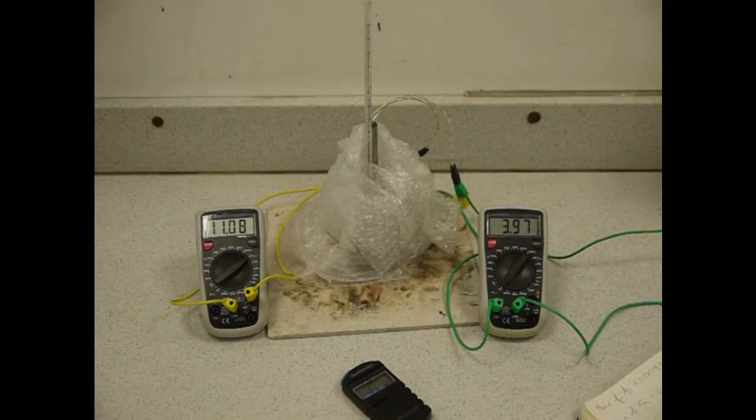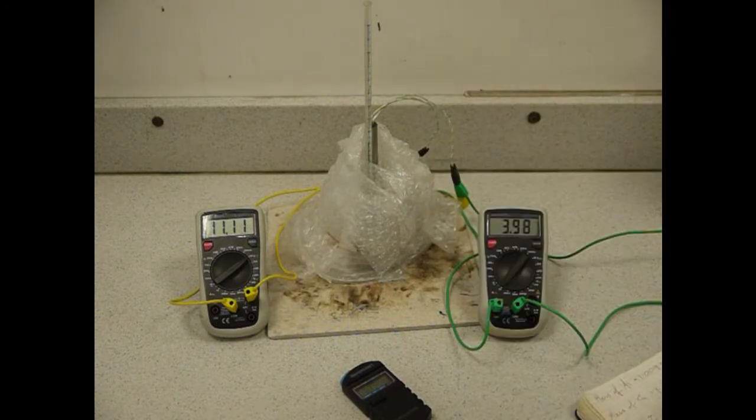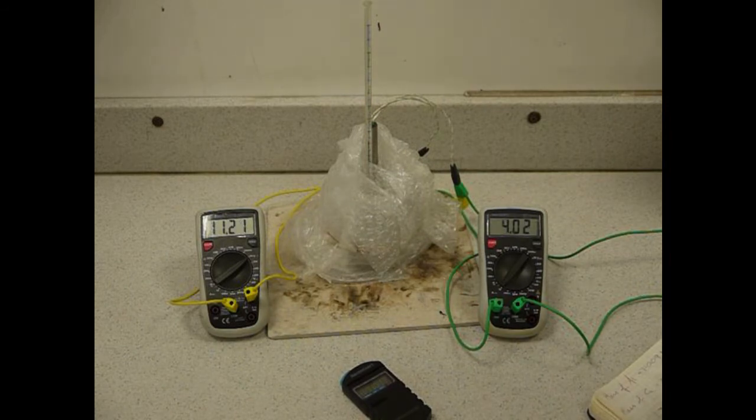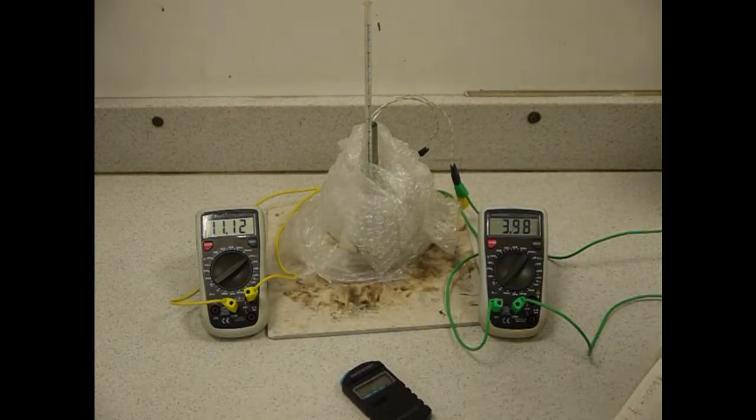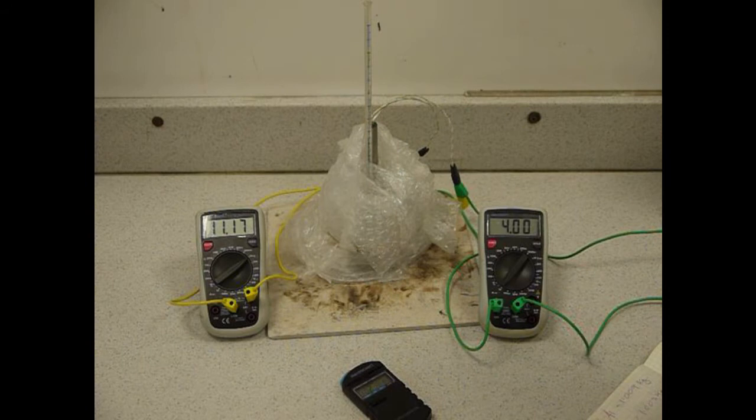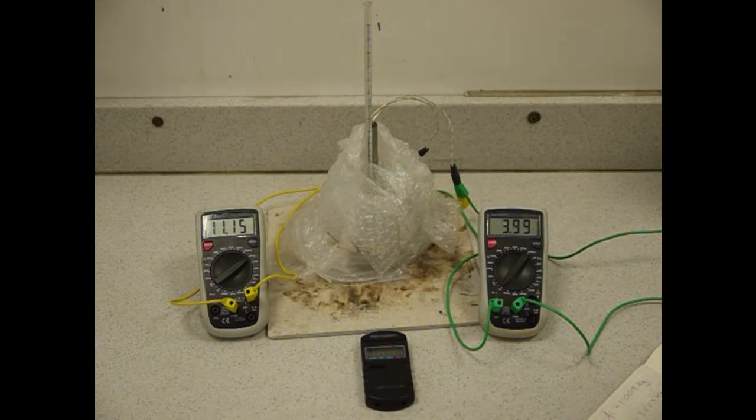I'm starting to take some measurements now of temperature and current and voltage. As you can see from the readings on the multimeters, the actual power being delivered by the immersion heater is actually closer to about 40 watts rather than 30 watts. The temperature is slowly creeping up and I'm making a reading once every minute.